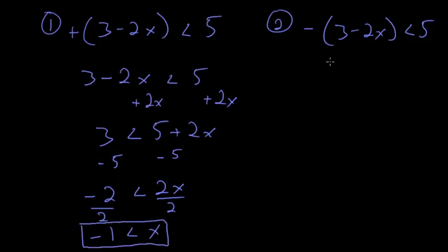For the other side, first I'm going to multiply each side by negative 1, and when you do that with an inequality the sign flips so we'll have greater than negative 5. Then from here I can add 2x to each side so we'll have 3 greater than negative 5.